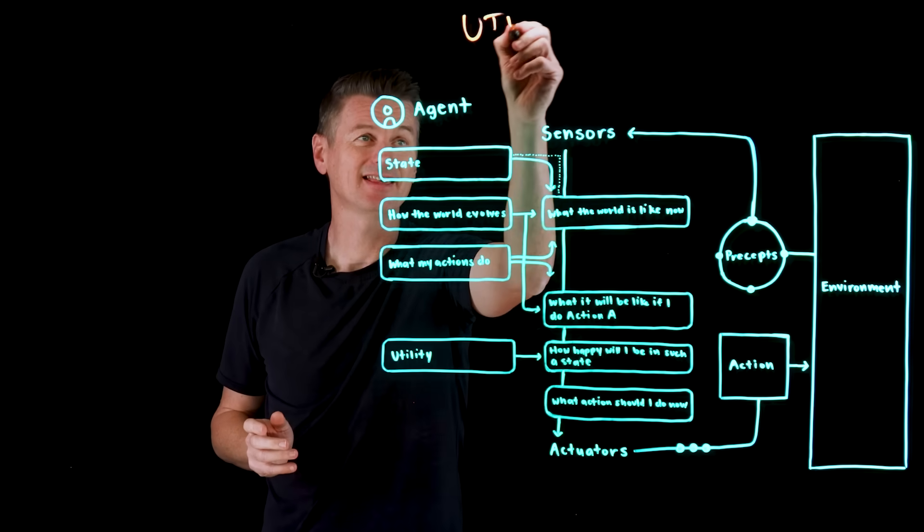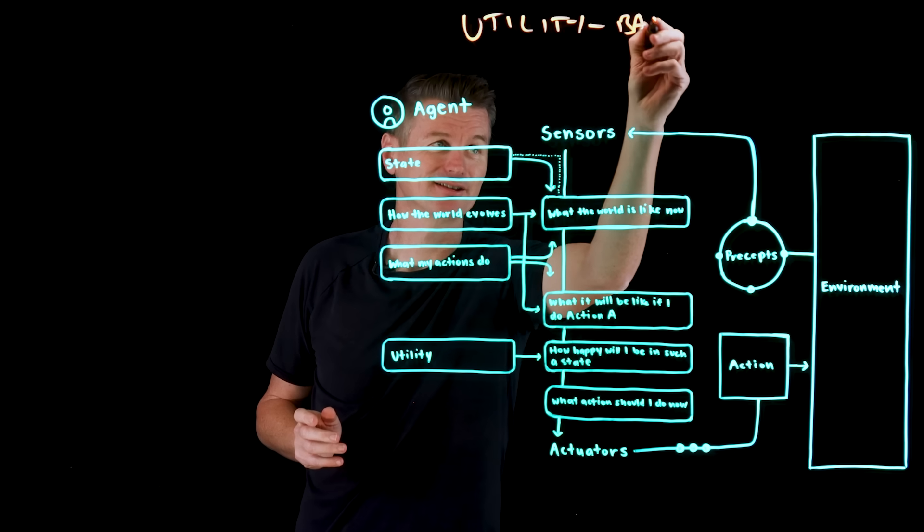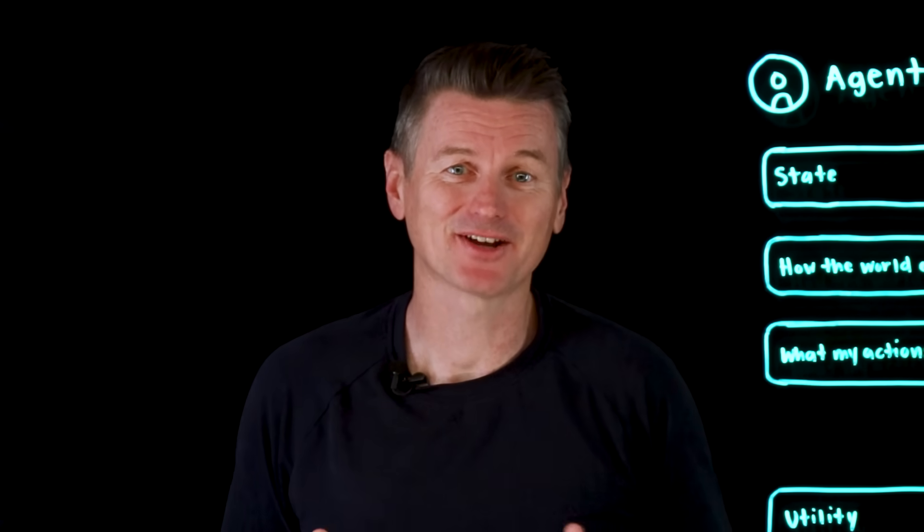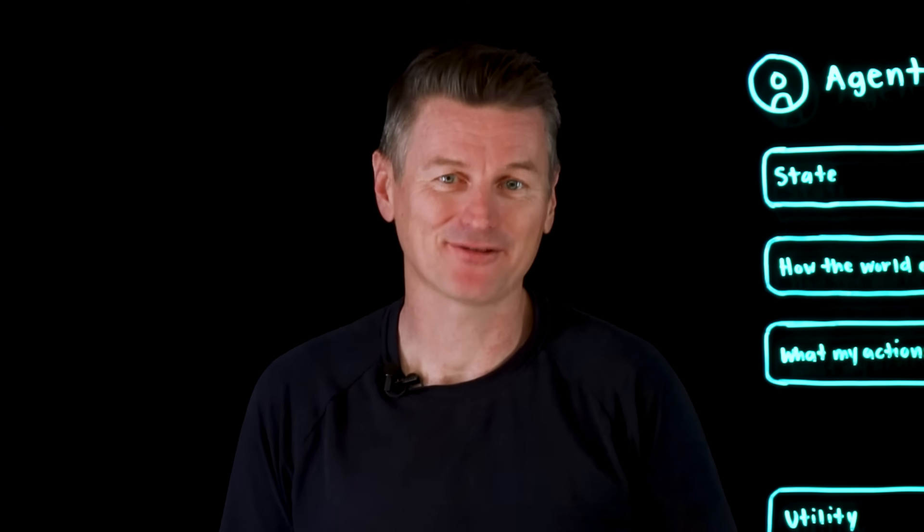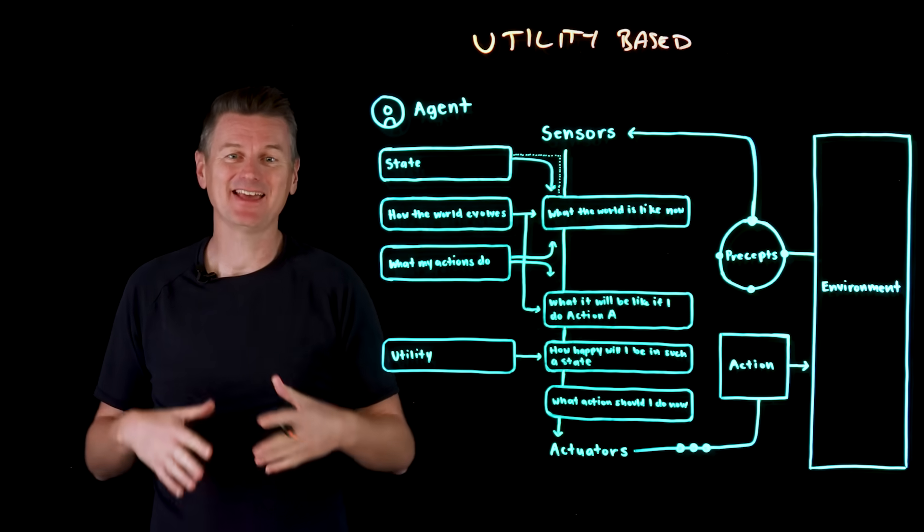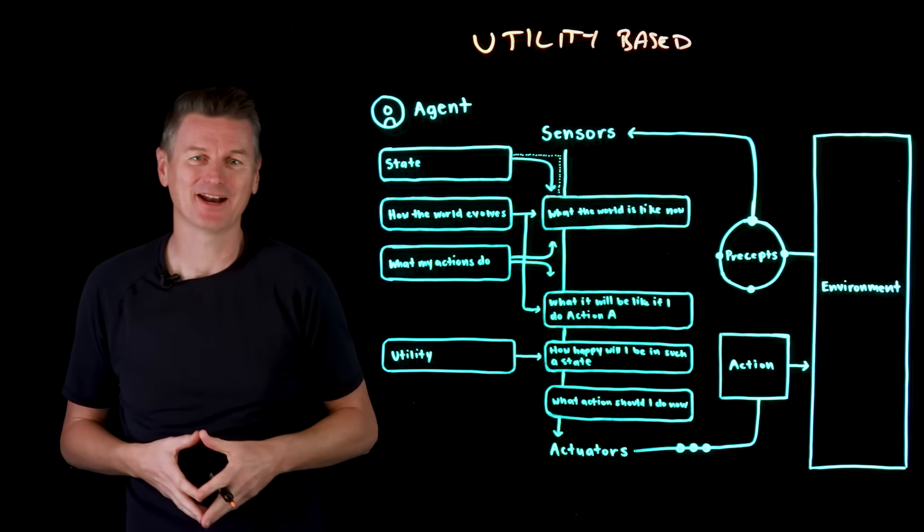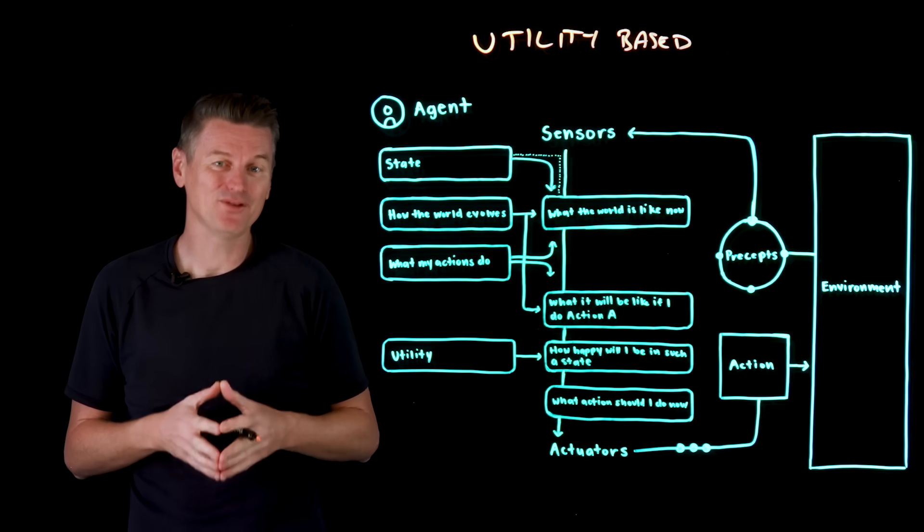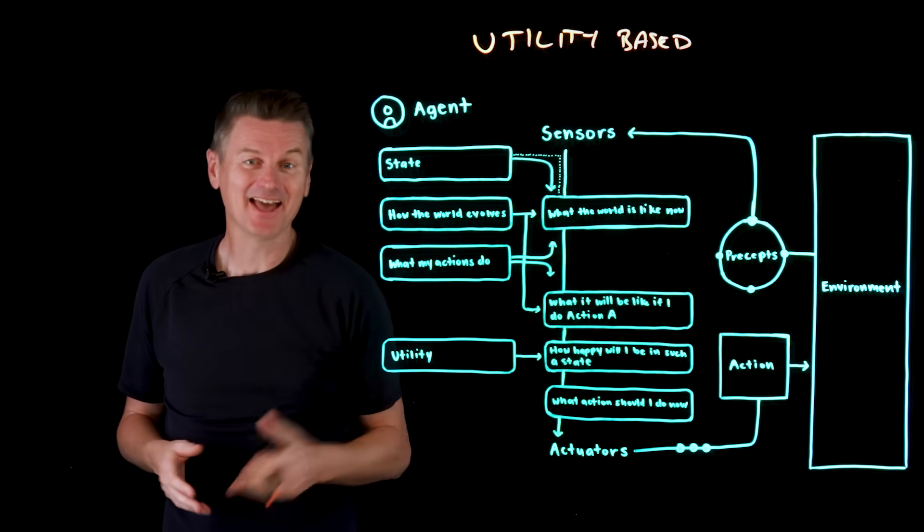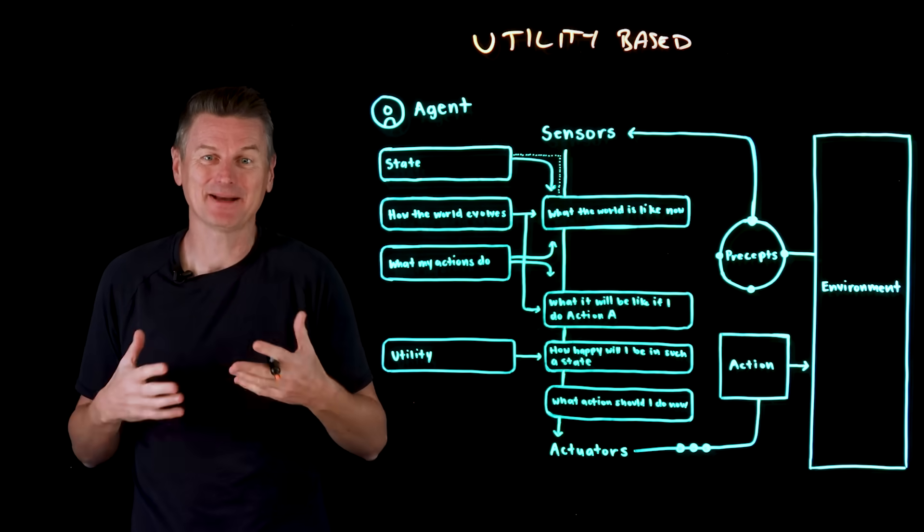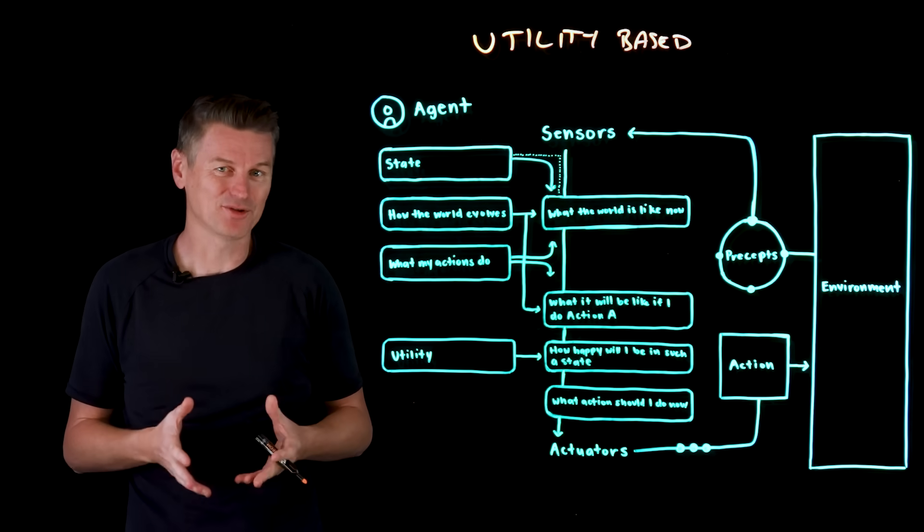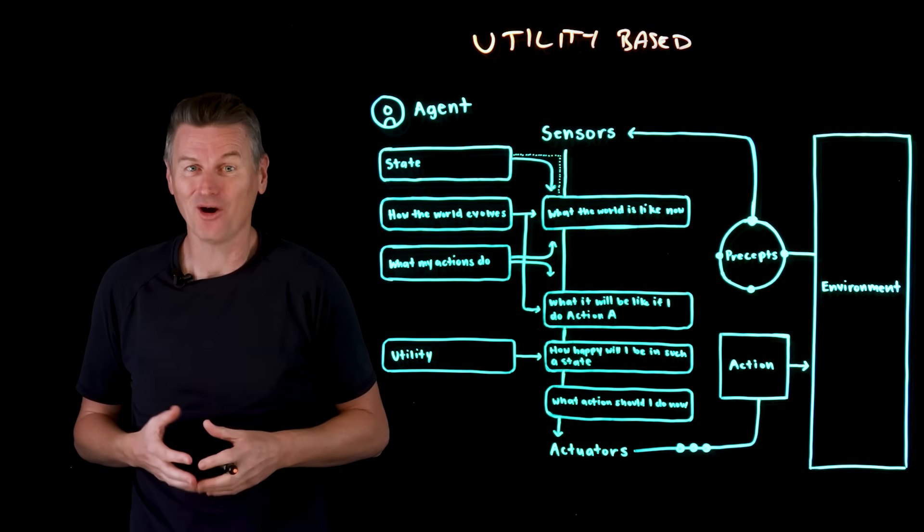A utility-based agent looks like this. And it considers not just if a goal is met, but how desirable different outcomes are. So utility here represents a happiness score or a preference value for a particular outcome. So for each possible future state, the agent asks, how happy will I be in such a state? Or really the expected utility of the future state. And this lets it rank options, not just pick anything that meets the goal.